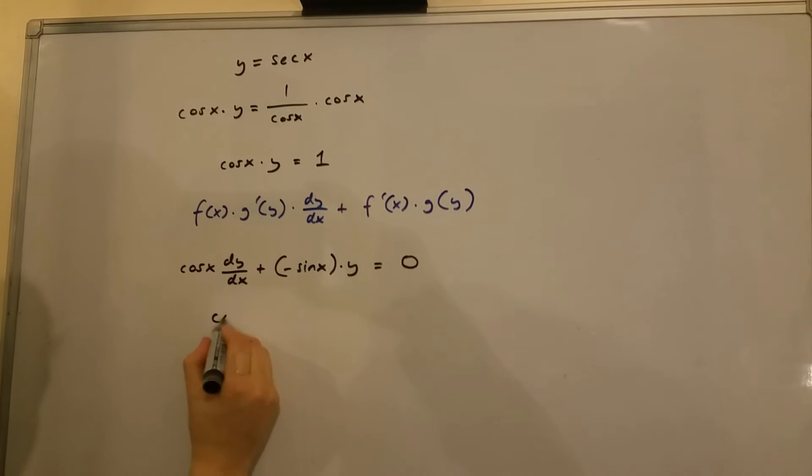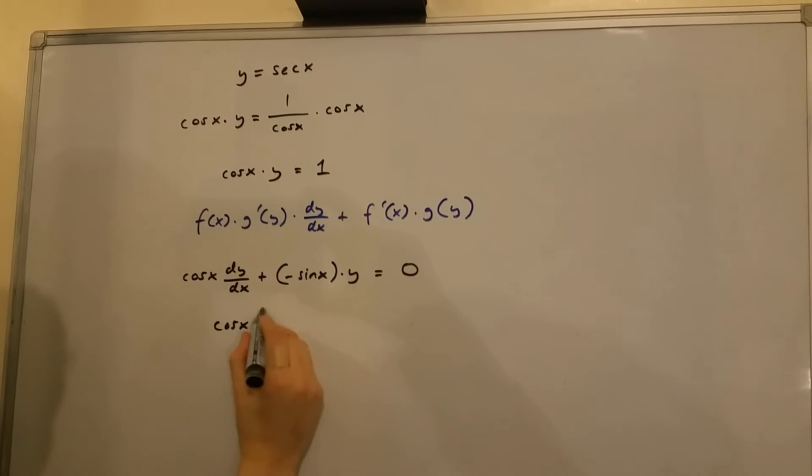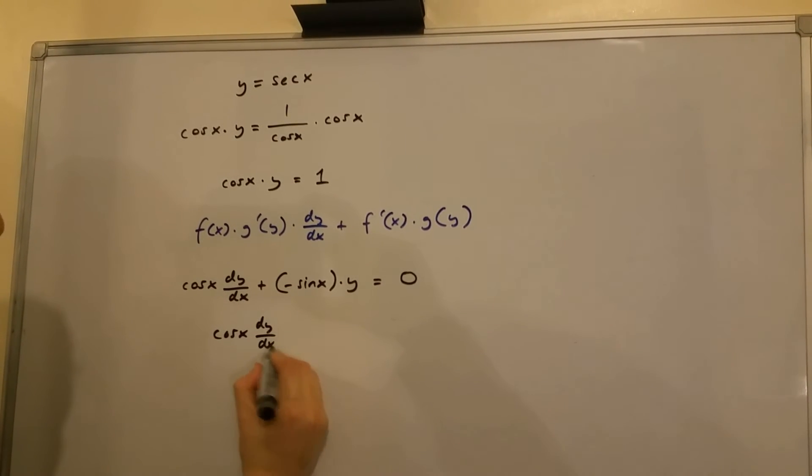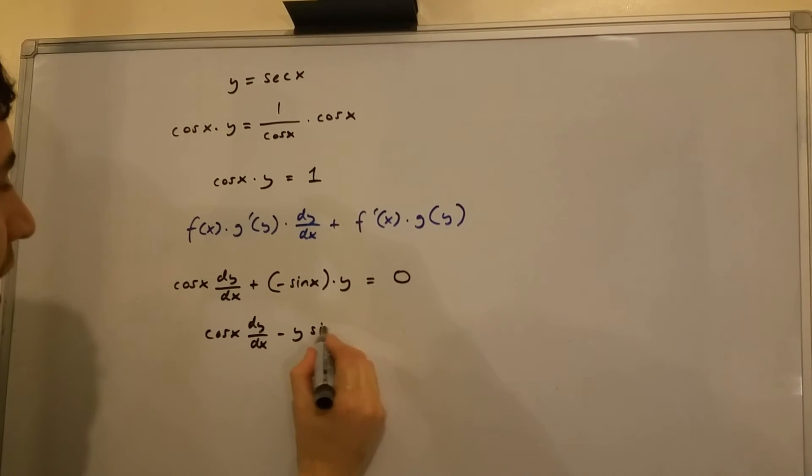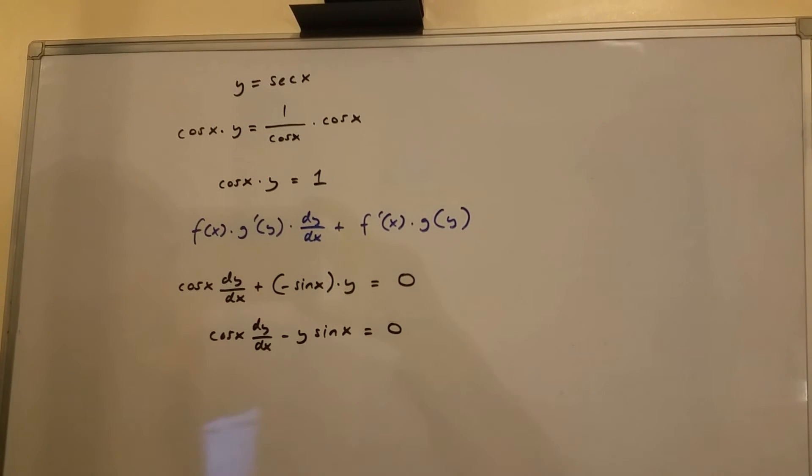And this is the same as cos x multiplied by dy over dx minus y multiplied by sin x equals 0.